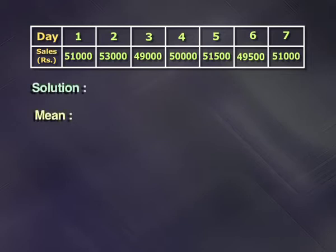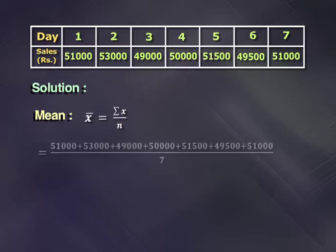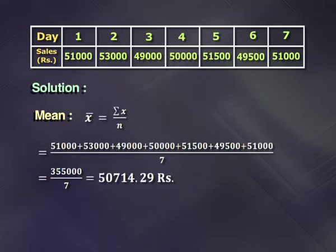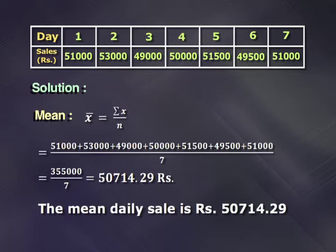We will begin with calculating mean. Since it is ungrouped data, x-bar equals sigma x upon n. We need to take the total of all the observations divided by the number of observations. So it will be 51,000 plus 53,000 plus 49,000 plus 50,000 plus 51,500 plus 49,500 plus 51,000, divided by 7. This comes to 3,55,000 upon 7, which equals 50,714.29 rupees. Thus the mean daily sales is rupees 50,714.29.